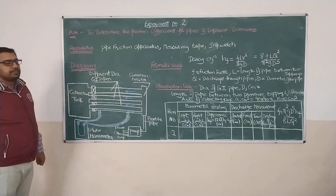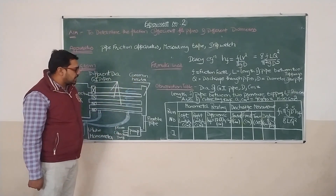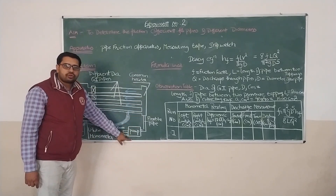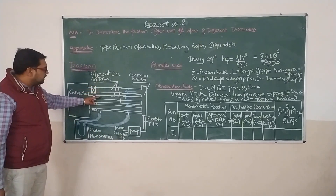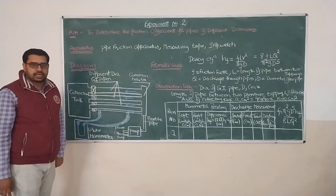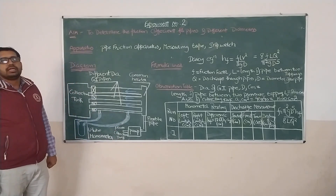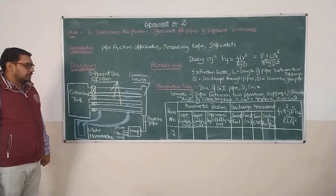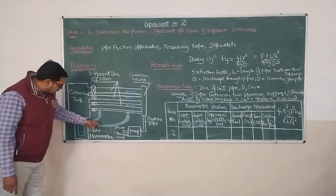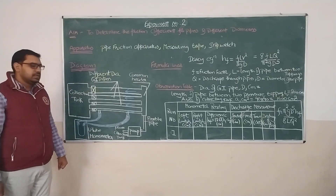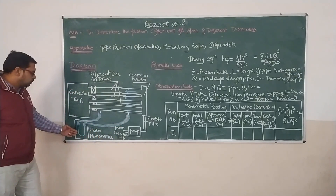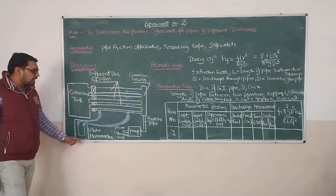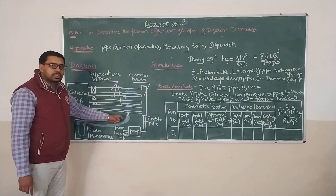In this apparatus, we will be having different GI pipes which are attached to a common header, which is getting supplied from a pump that is attached to it through a flexible pipe. On each GI pipe, there are two pressure tappings and the distance between these two tappings is fixed — it is around 2 meters. These two tappings are attached to a U-tube manometer to measure the pressure difference between the two tappings, which is used to find out the head loss that has taken place between the two tappings.